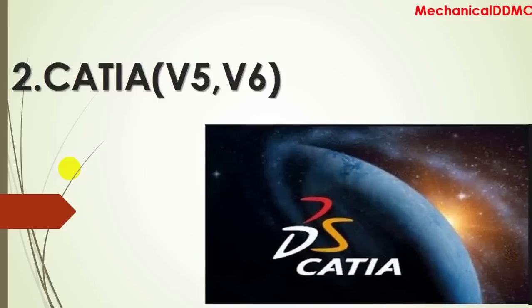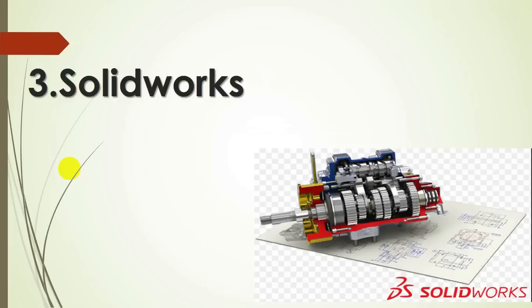The second one is CATIA. CATIA is 3D modeling software where you can draw 2D, convert 2D into 3D, or directly model 3D drawings. Most industries are using CATIA as a basic software to model 3D objects and to convert 2D into 3D, so you should know how to use CATIA for your career in mechanical engineering and design.